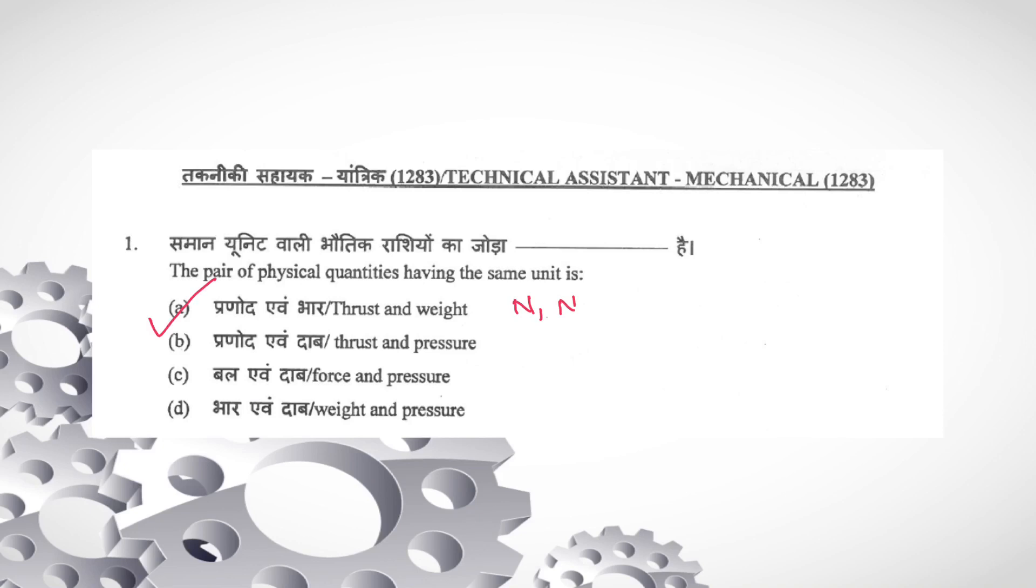Here, thrust unit is Newton. Pressure unit is Newton per mm square or megapascal or bar also. They are writing. So B not possible.